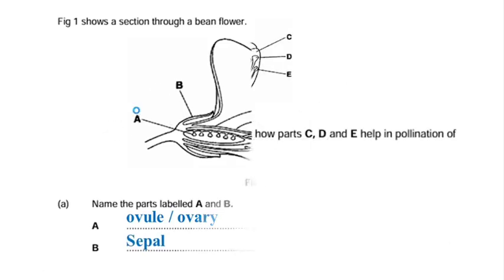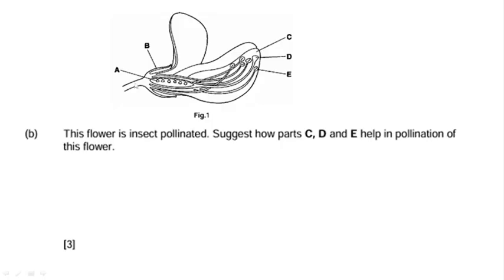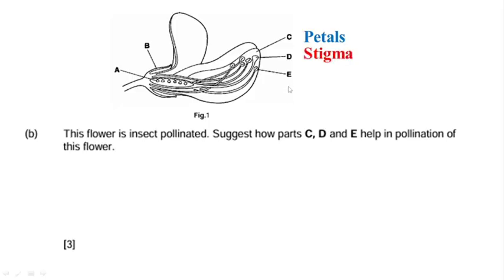Let us now move on to question B. Question B reads: this flower is insect pollinated. Suggest how parts C, D, and E help in pollination of this flower. The part labeled C is the petals, the part labeled D is the stigma, and the part labeled E is the anther.